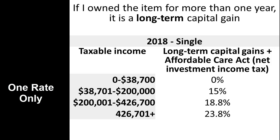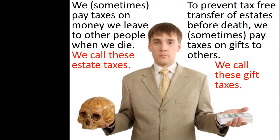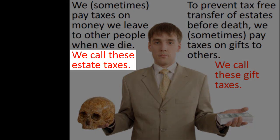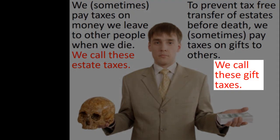Consequently, all of the taxpayer's capital gains for a particular year will be taxed at the same rate. In other words, there is no run up the rate schedule where some gains are taxed at 15%, then some at 20%, and so forth. As mentioned previously, the federal government charges taxes on the gratuitous transfer of money from one person to another — either at death, called estate taxes, or during life, called gift taxes.